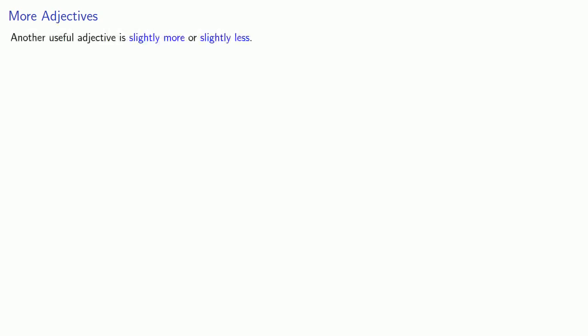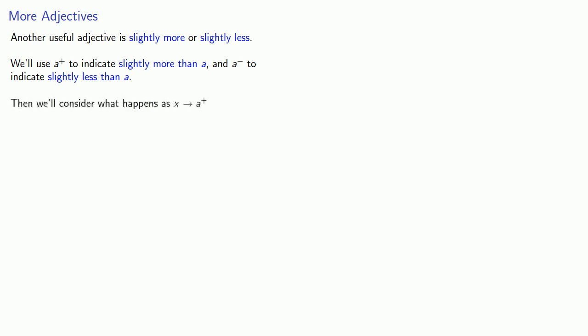Let's introduce some more adjectives. Another useful adjective is slightly more or slightly less. We'll use a superscript plus to indicate slightly more than a, and a superscript minus to indicate slightly less than a. With this notation, we can consider what happens as x goes to a but always stays slightly more than a — we say x is going to a from above. Likewise, we can consider what happens as x goes to a but stays slightly less than a, which we call from below.